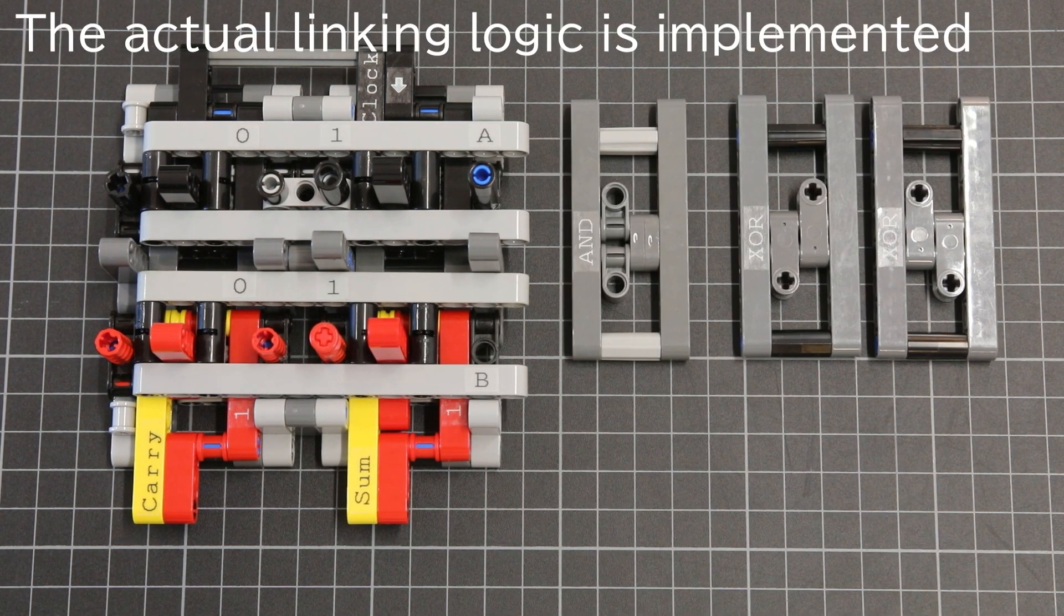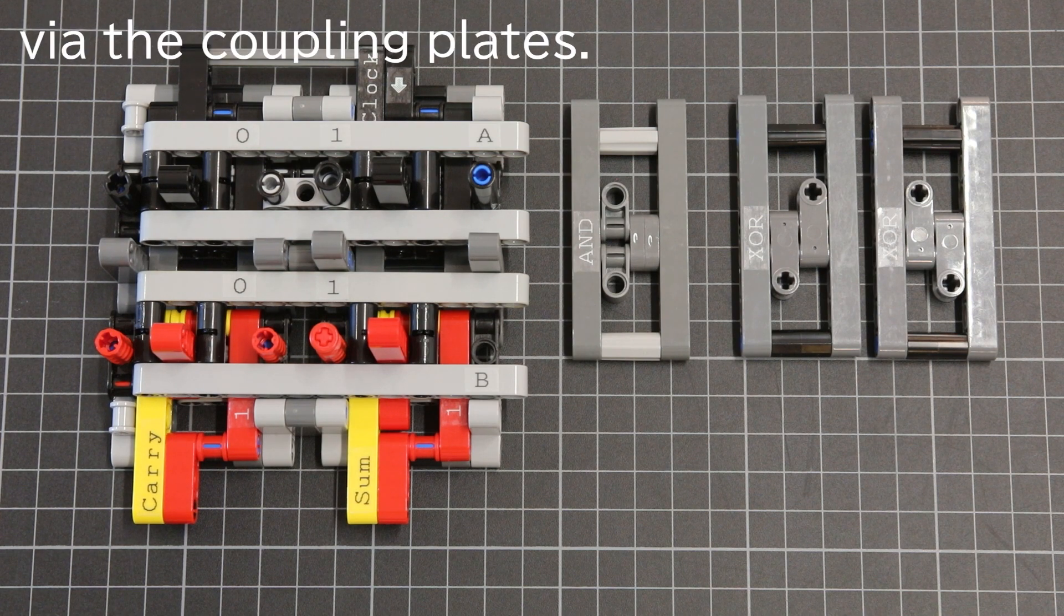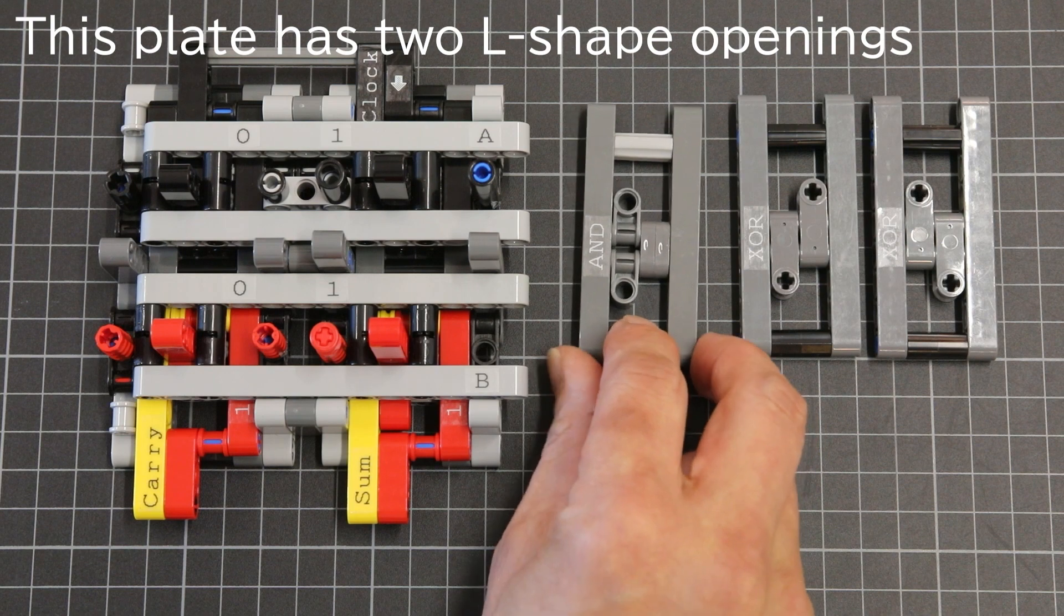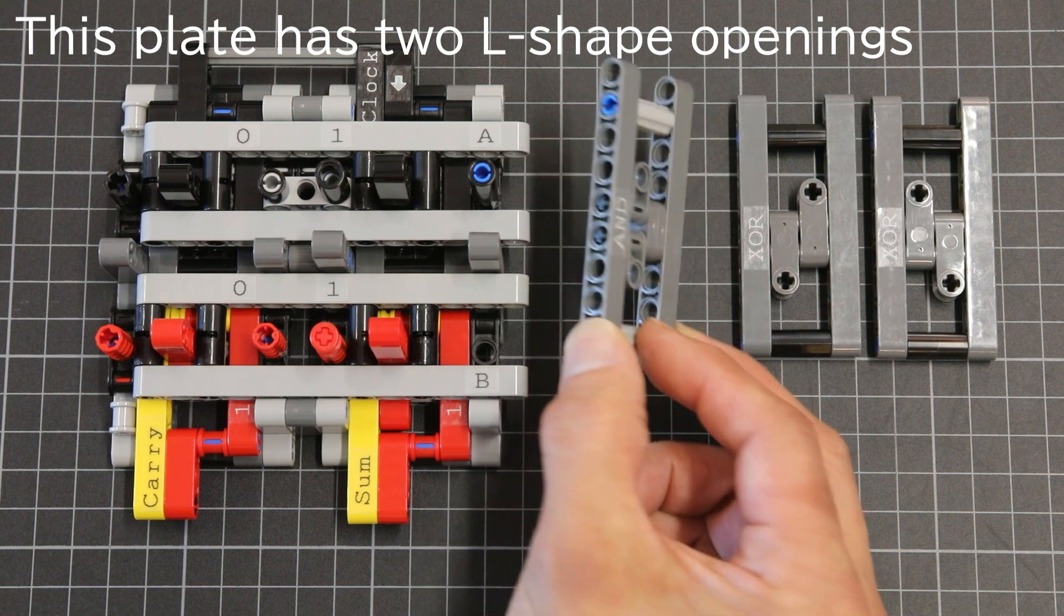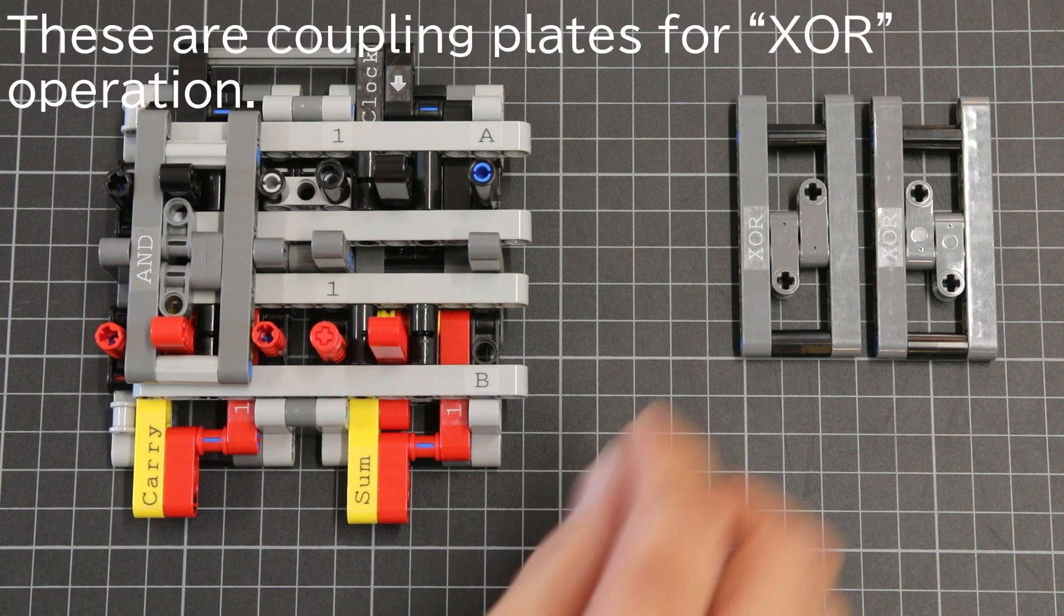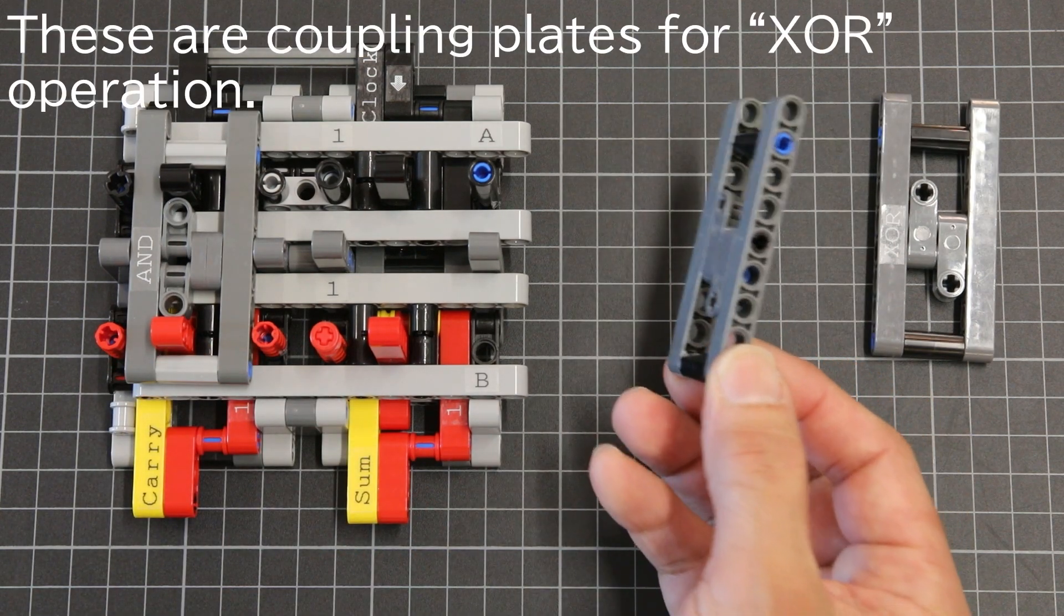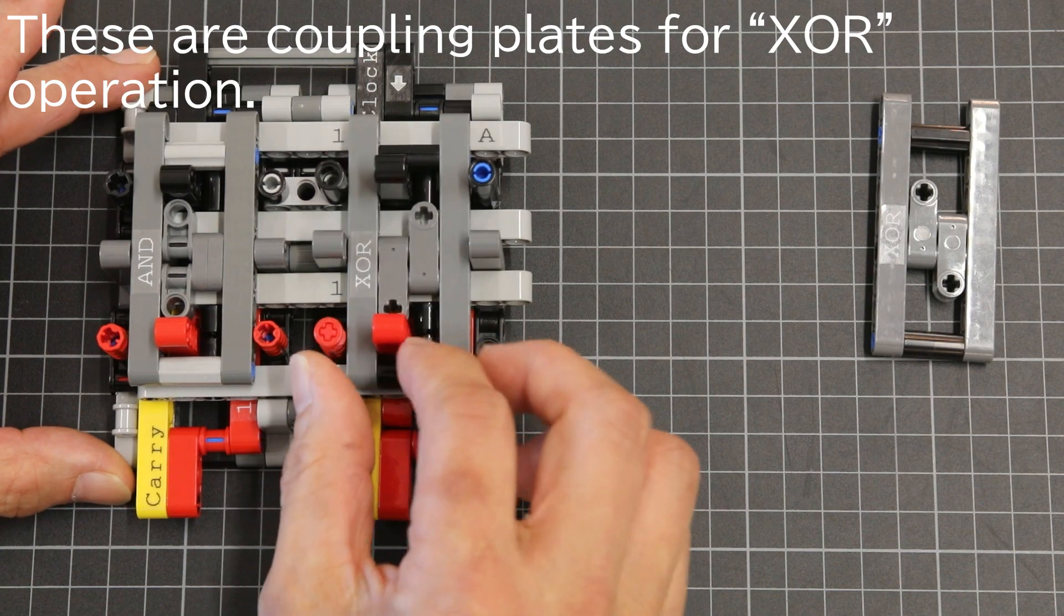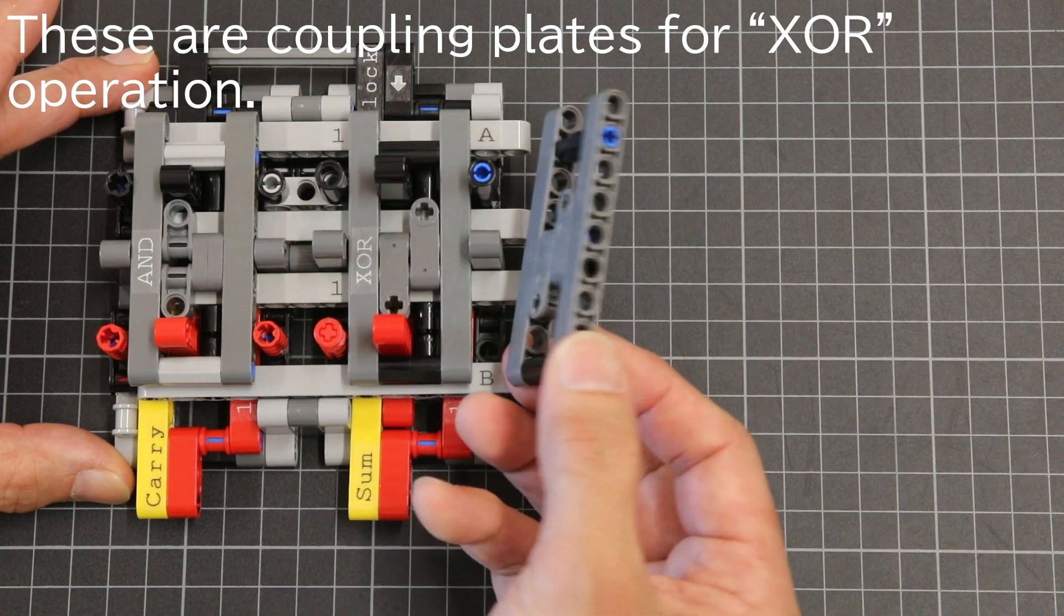The actual linking logic is implemented via the coupling plates. This plate has two L-shaped openings for the AND operation. These are coupling plates for exclusive OR operation.